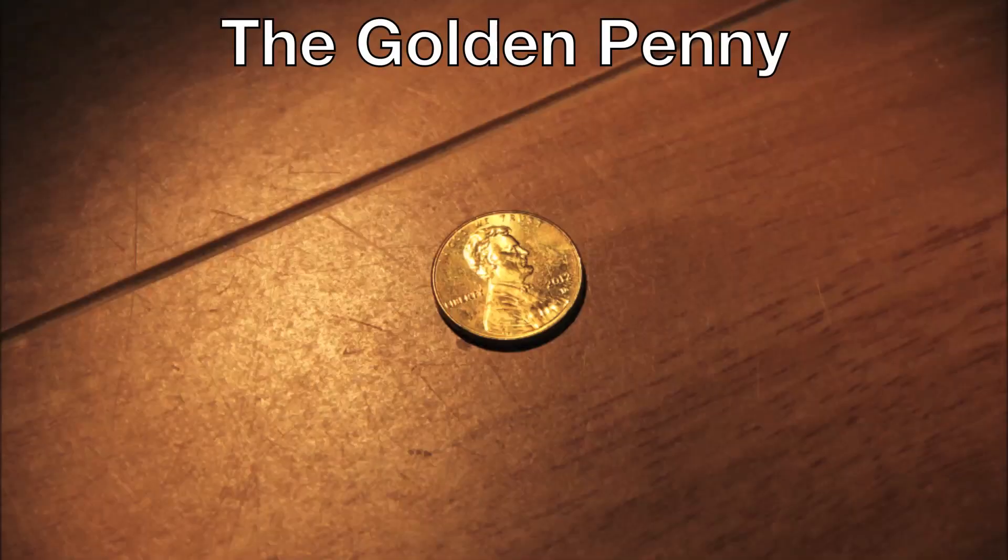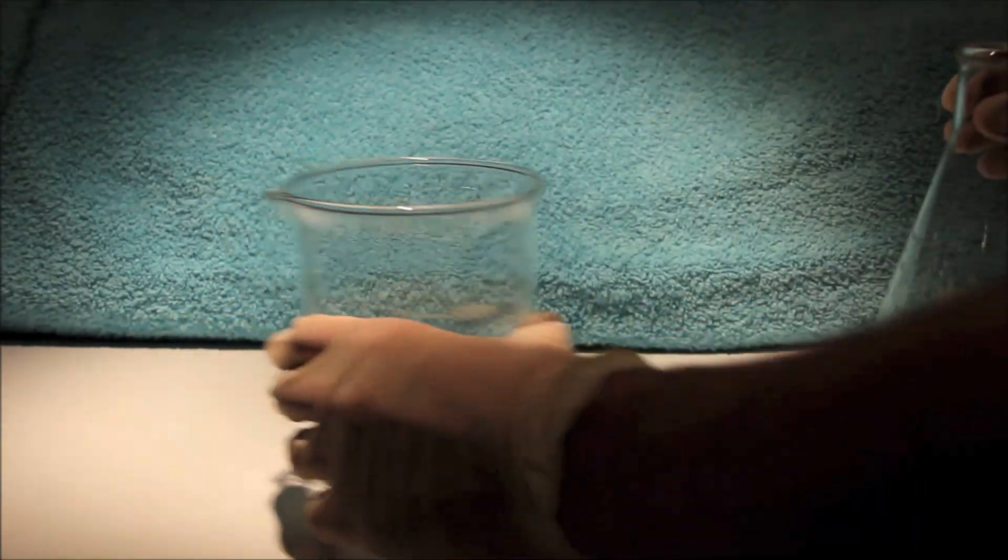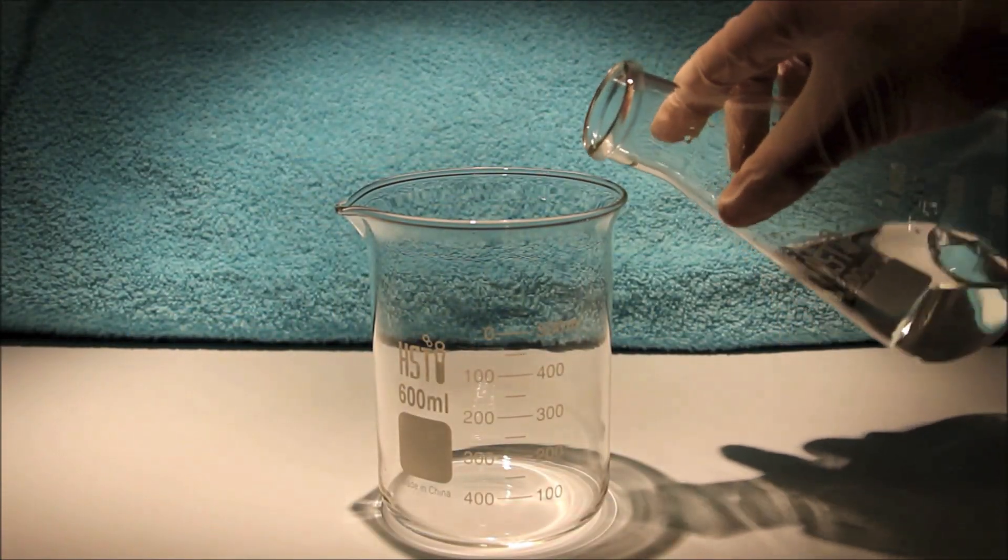In this part of the video, I'll show you how to make a penny which seems to be made of gold. Here I have the original solution of zinc chloride produced in the first experiment, and a beaker to transfer the solution to.